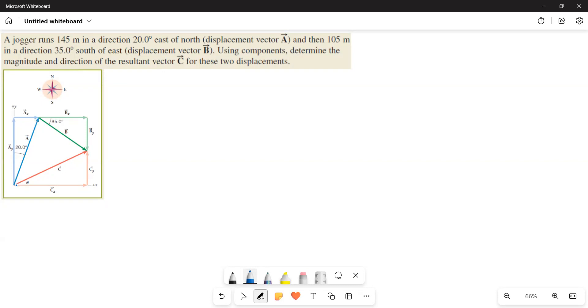So he is making an angle of 20 degrees. This is the north, east, southwest, north of east or east of north. So here it is the angle.